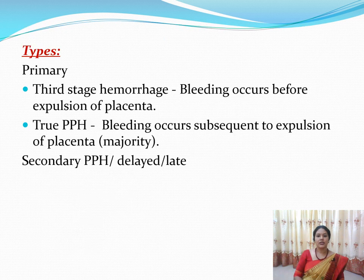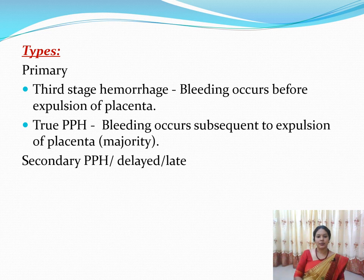Postpartum hemorrhage is of two types: primary postpartum hemorrhage and secondary postpartum hemorrhage. Primary postpartum hemorrhage is further divided into third stage hemorrhage and true postpartum hemorrhage. If bleeding occurs before the expulsion of the placenta, that is known as third stage hemorrhage.